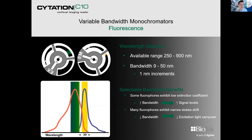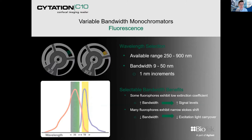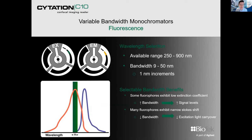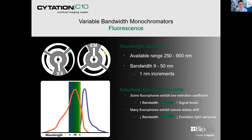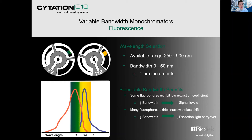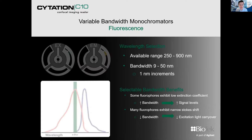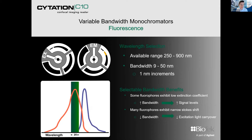I want to bring your attention to the monochromator fluorescence and wavelength selection. The available range is between 250 and 900 nanometers with a bandwidth of 9 to 50 nanometers, and you can dial that into one nanometer increments. The selectable bandwidth has its benefits, which I'll leave for Lisa to cover in the later session.